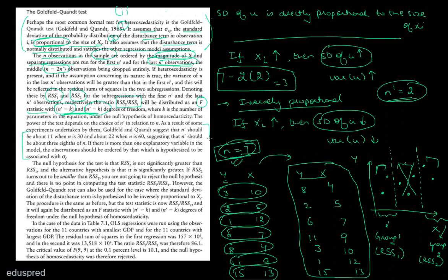They also provide a rule of thumb for determining N': N' should be about three-eighths of N. So if N is 30, then N' is around 11; if N is 60, then N' is around 22. If N' is not given in the question, you can use this rule.